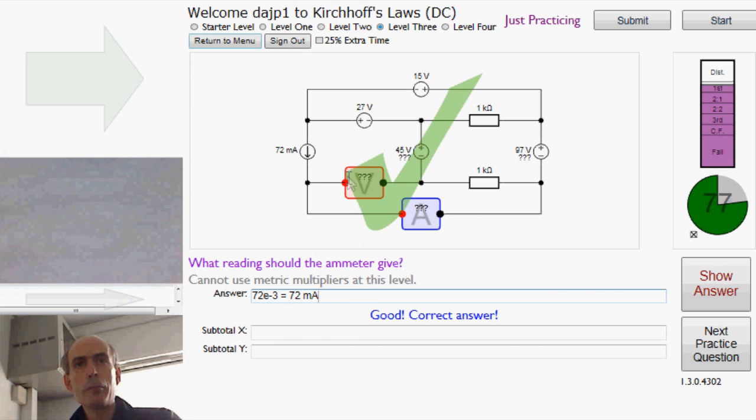Well, this is an ideal voltmeter. And ideal voltmeters pass no current across them. So there is an infinite resistance, in effect, inside an ideal voltmeter. If there's no current flowing through the ideal voltmeter,